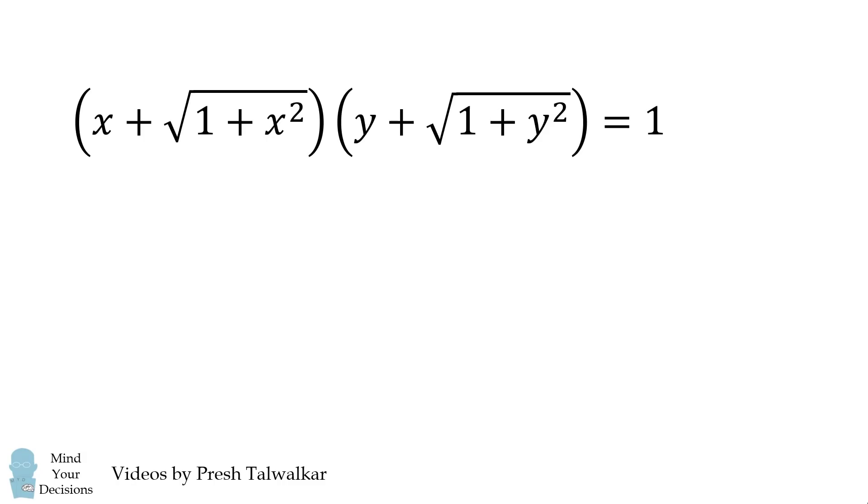Suppose x plus the square root of 1 plus x squared multiplied by y plus the square root of 1 plus y squared is equal to 1. What is the value of the quantity x plus y squared equal to? x and y are real numbers.